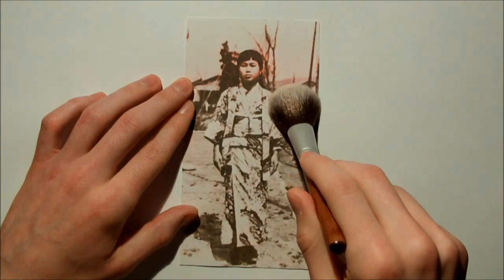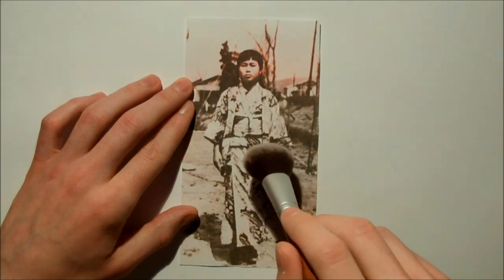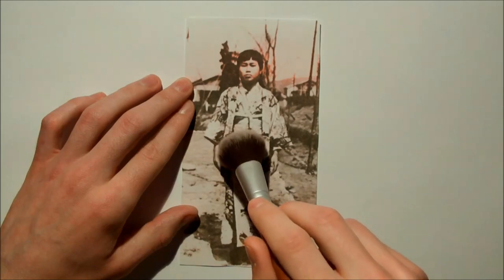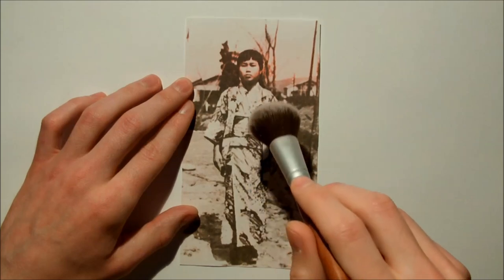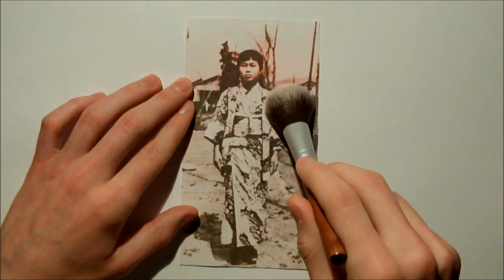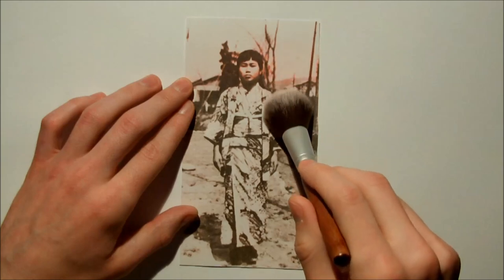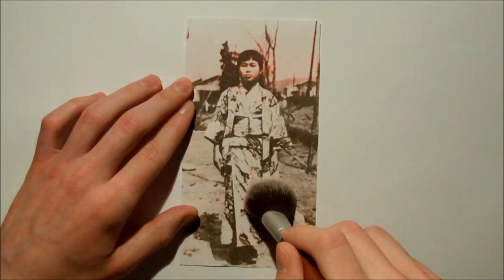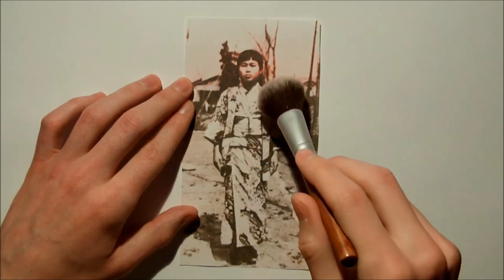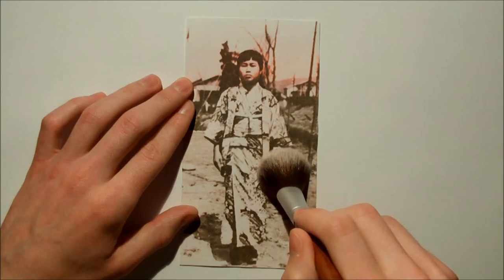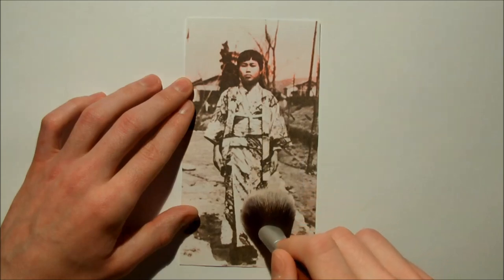However, after years, the girl whose name was Sadako Sasaki became sick and was diagnosed with leukemia. She decided to start folding thousand origami cranes, hoping that when all the cranes are done, according to the legend, one of her wishes, which was to recover from illness, will come true.